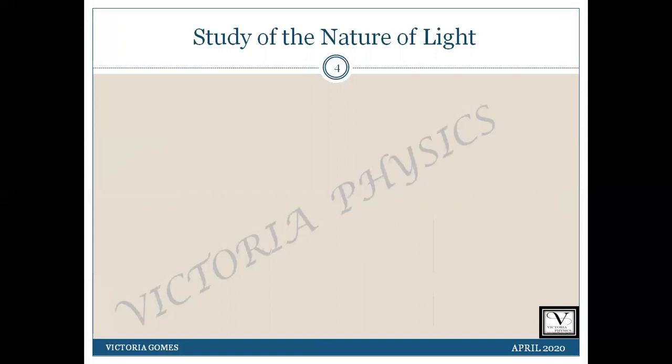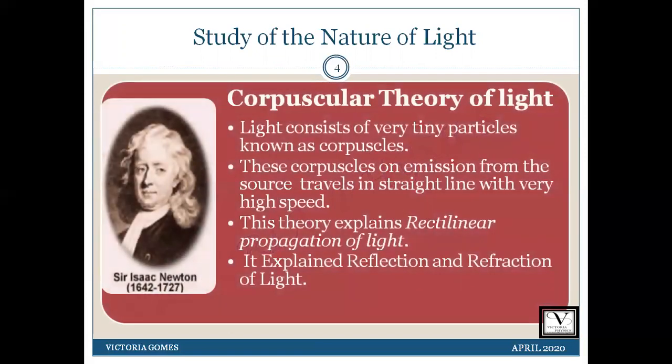Some of the main theories include the corpuscular theory of light. Newton proposed that light sources emit tiny particles called corpuscles, which are of negligible mass. Hence, they are not affected by gravitational force and travel in a straight line away from luminous objects with very high speed. This theory successfully explains the rectilinear propagation of light.